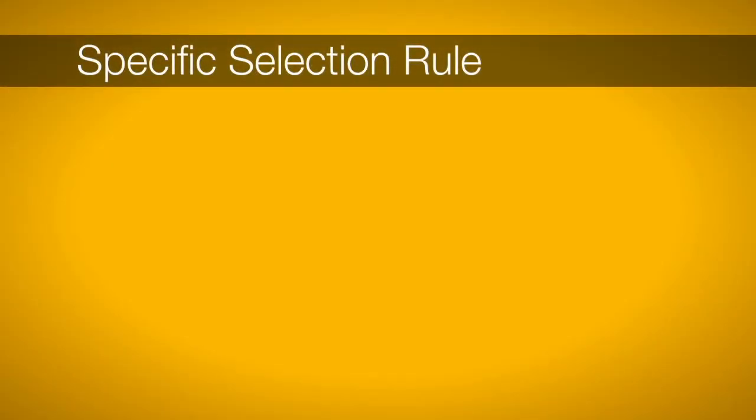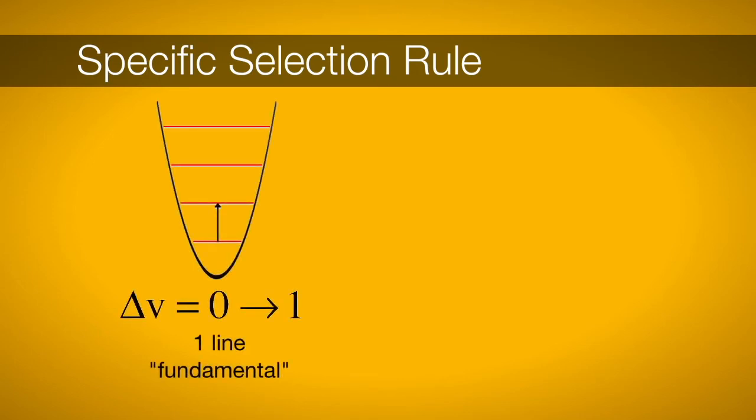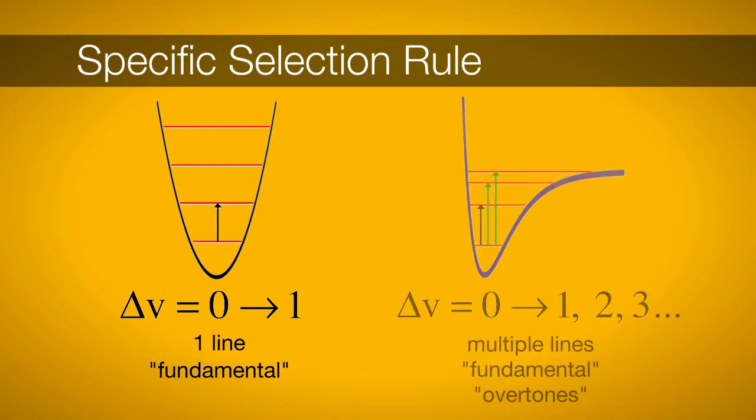Specific selection rules tell us, specifically, what quantum number transitions we should expect. In a harmonic oscillator, the specific selection rule is delta V equals 1. This selection rule is relaxed in the anharmonic case where, along with the delta V equals 1, we can also see delta V equals 2, 3, and so on.